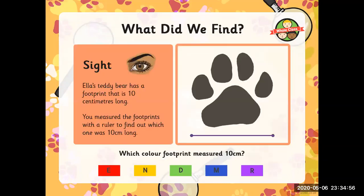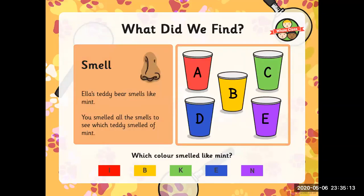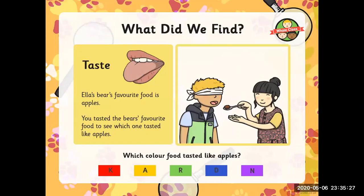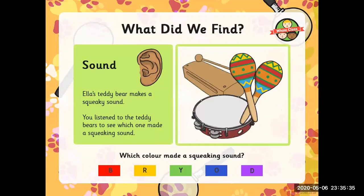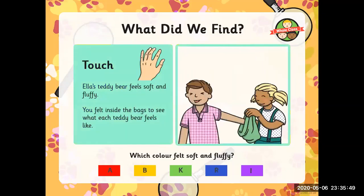What did we find? Smell: Ella's teddy bear has a footprint that is 10 centimetres long — you measured the footprint with a ruler to find out which one was 10 cm long. Which colour footprint measured 10 cm? Smell: which colour smelled like mint? Taste: which colour food tasted like apples? Sound: which colour made a squeaking sound? Touch: Ella's teddy bear feels soft and fluffy — which colour felt soft and fluffy?